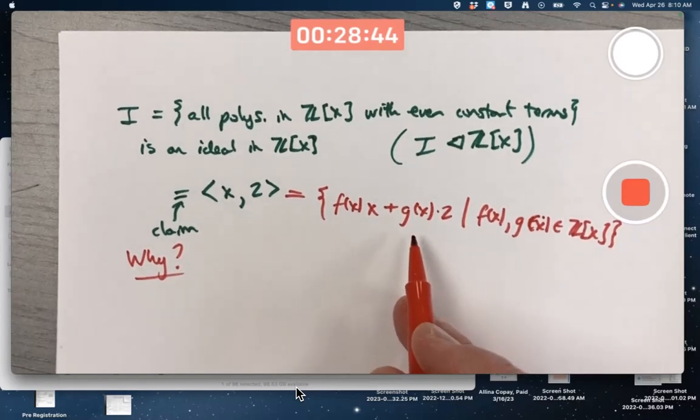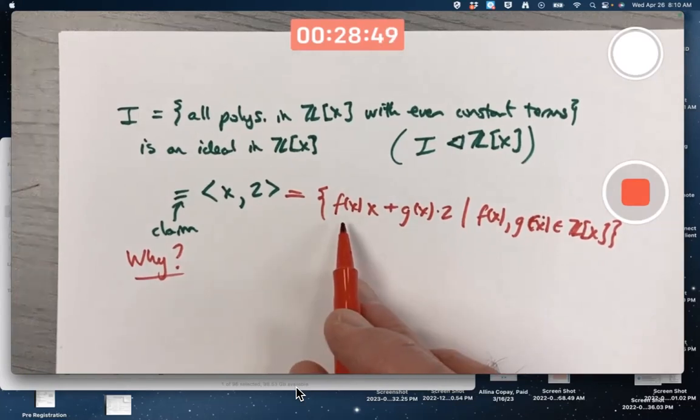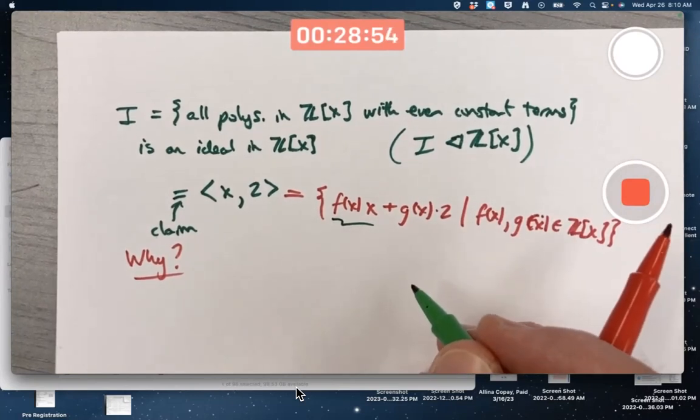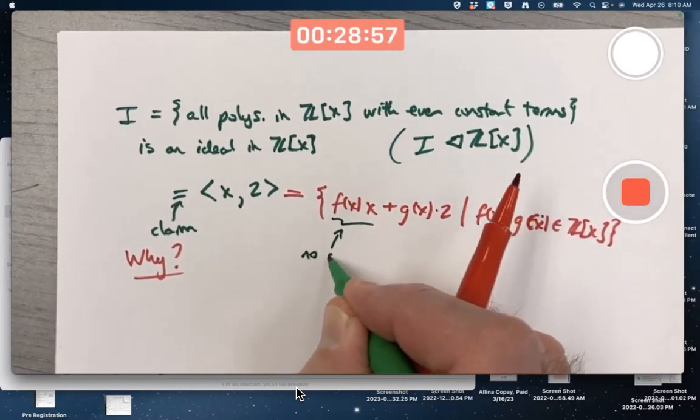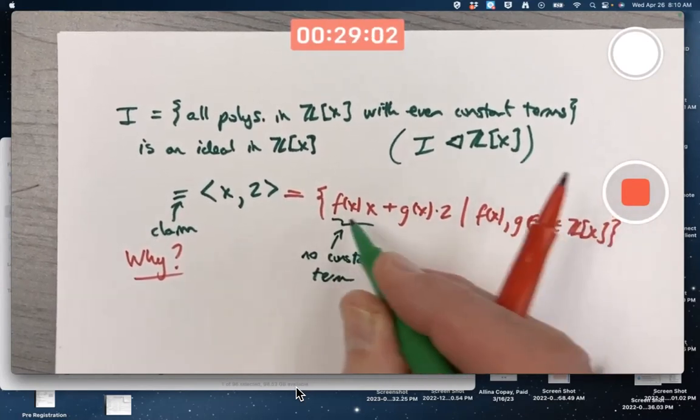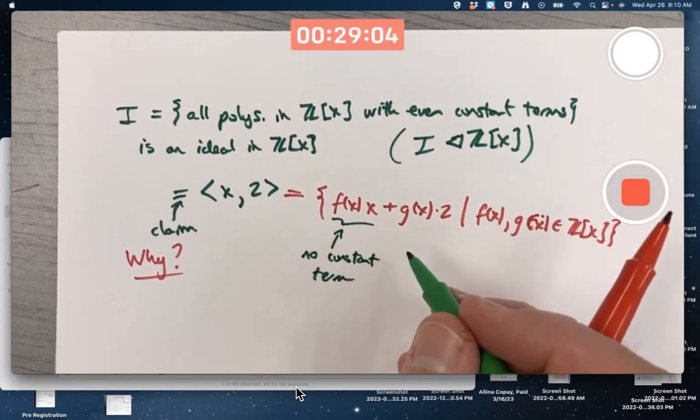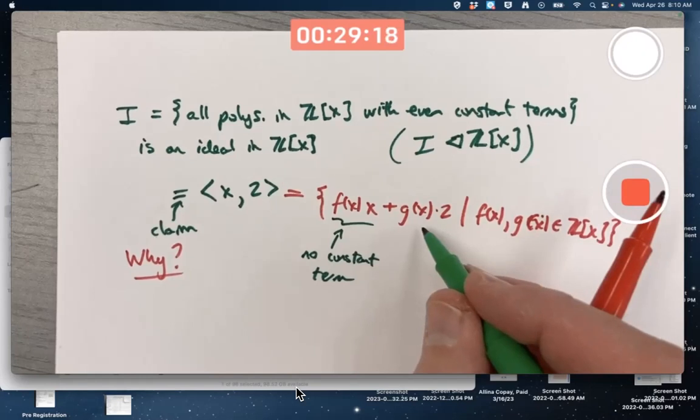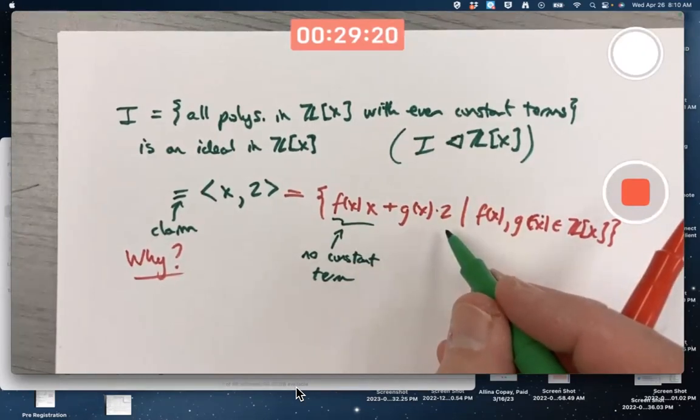Certainly such polynomials have a constant term that's even. f(x) times x is not going to have any constant term at all, right? You multiply a polynomial f(x) times x, multiplying every term by x, you're not going to have any constant terms. The lowest possible degree will be 1 or lowest possible power of x will be 1.